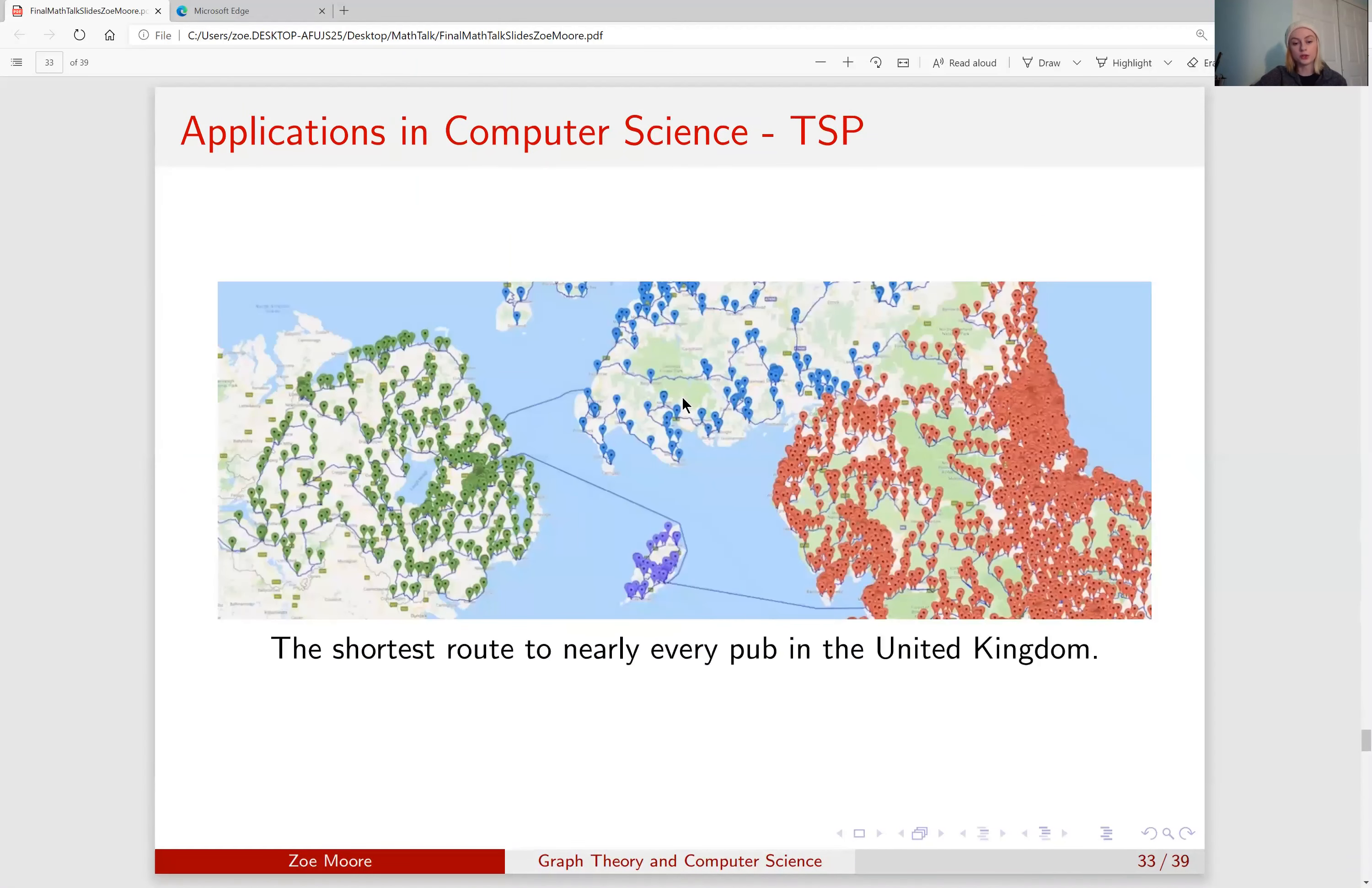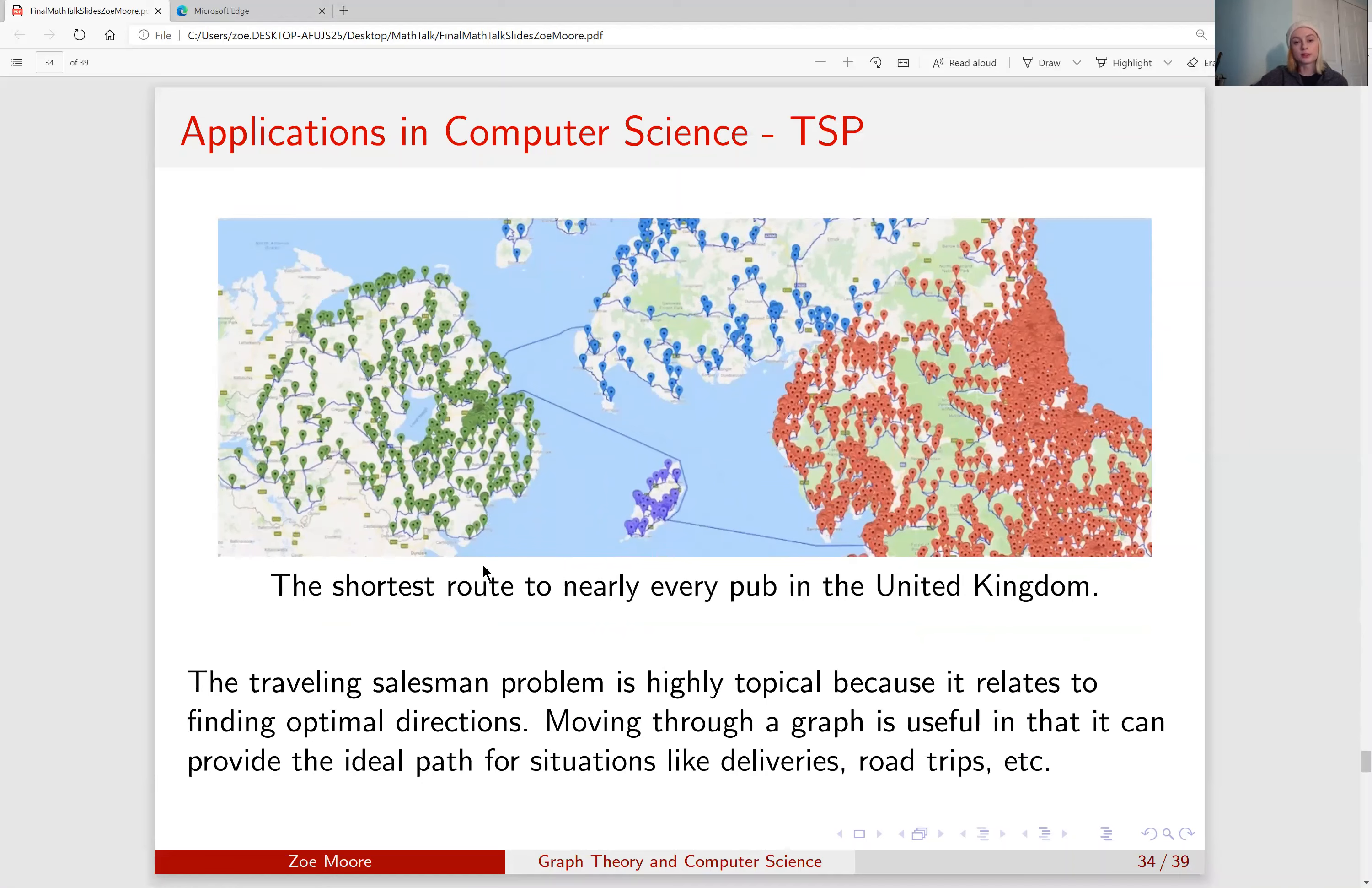So the example that we saw earlier, we determined the shortest path to nearly every pub in the United Kingdom. You can see each pub is listed and the shortest path connects every pub where you can start at 1 and then work your way throughout the United Kingdom until you return back. The traveling salesman is regarded as a highly topical problem because it relates to finding optimal directions. Moving through a graph is useful in that it can provide the ideal path for situations for things like deliveries or road trips.